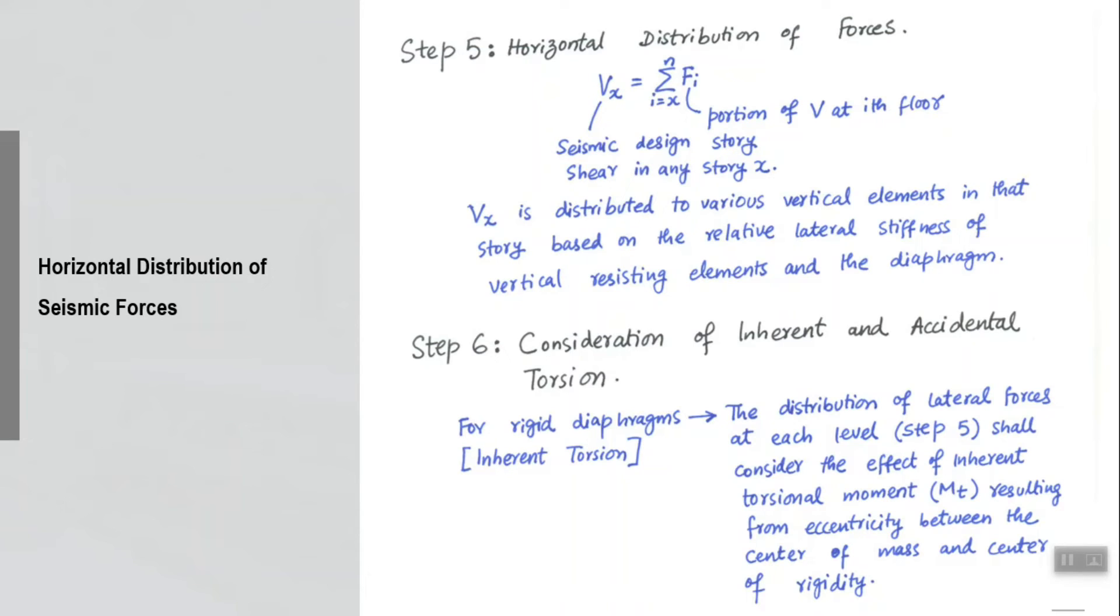One last thing and then we can end this session, and that is about horizontal distribution of forces. Vertically you can distribute, so each story will receive one force. If you are using a rigid diaphragm option, you can apply that to the center of that diaphragm. Each diaphragm will be applied by just one force in one particular direction. If you are doing it for y direction of the building then one in the y direction also, and I will explain the orthogonality thing in the next class.